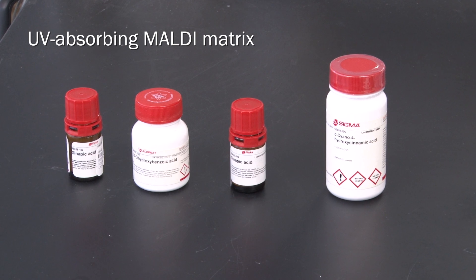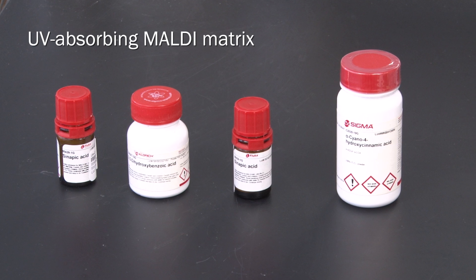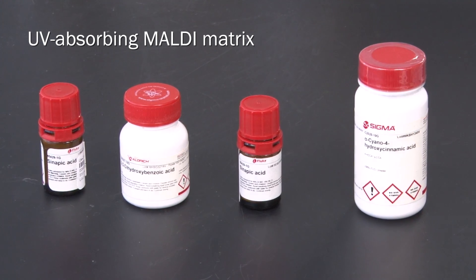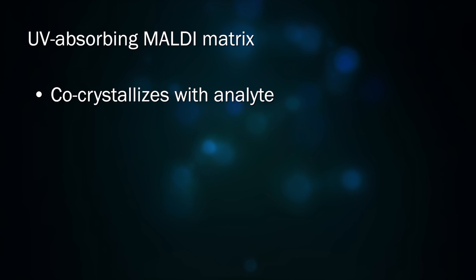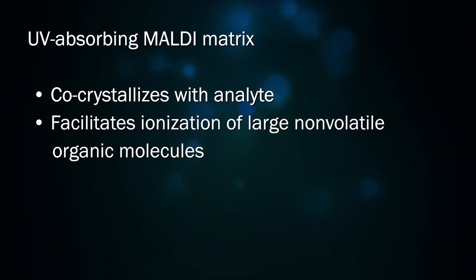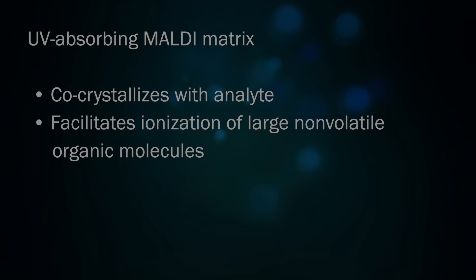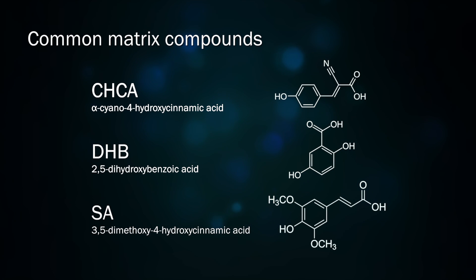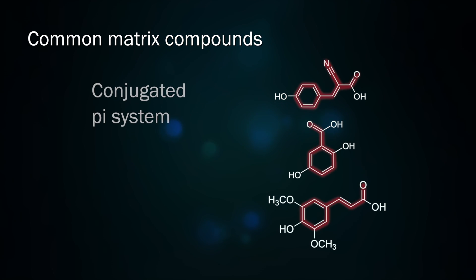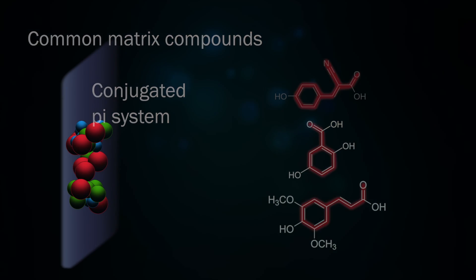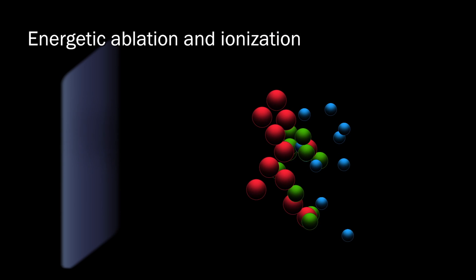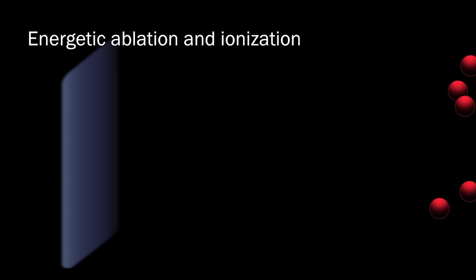One defining characteristic of MALDI-TOF mass spectrometry is the use of a UV-absorbing matrix which co-crystallizes with the analyte on the target plate and facilitates ionization of large, non-volatile organic molecules. There are many substances that are commonly used as a matrix, but they tend to be moderately small organic molecules with a conjugated pi system that absorbs UV light. This allows the energetically excited matrix molecules to physically ablate from the surface of the target, carrying the analyte molecules into the gas phase along with them.